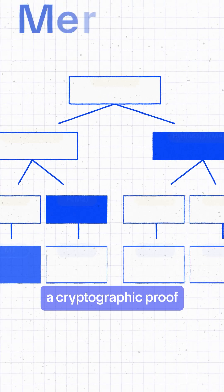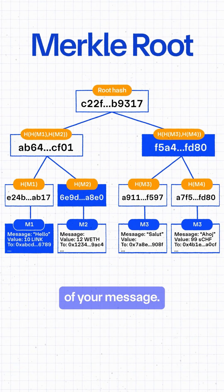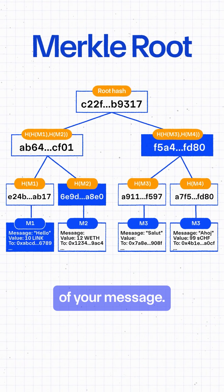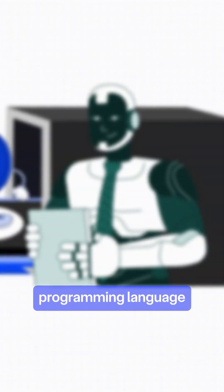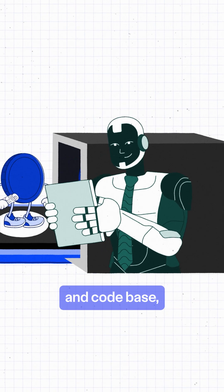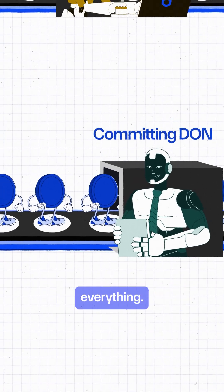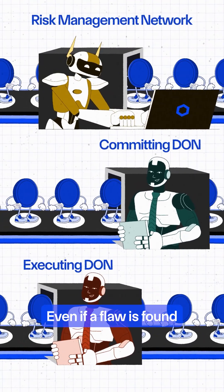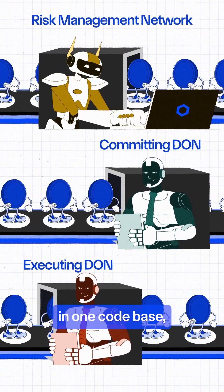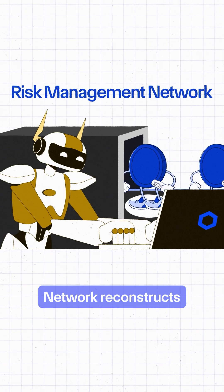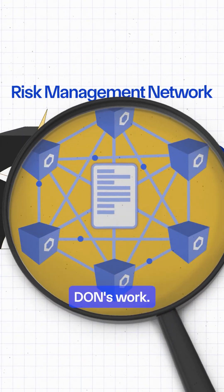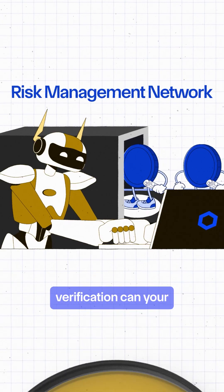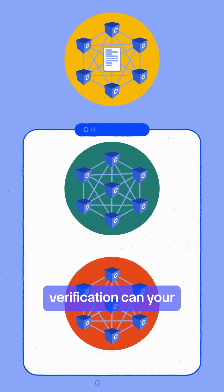The network then creates a cryptographic proof, or a Merkle root, of your message. Third, a separate risk management network, written in an entirely different programming language and codebase, independently verifies everything. Even if a flaw is found in one codebase, it doesn't extend to other parts of the system. The risk management network reconstructs the entire message tree to validate the committing DON's work. Only after this verification can your message proceed.